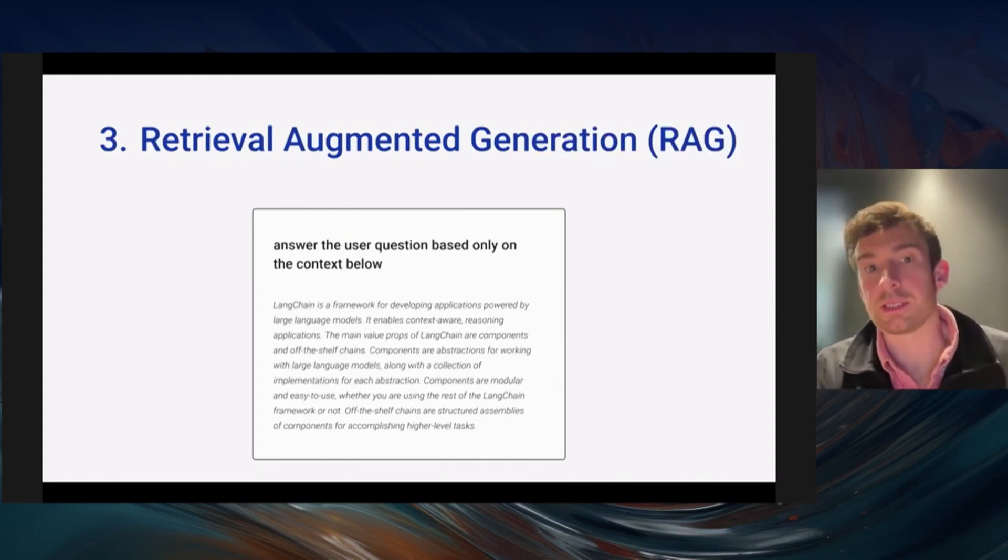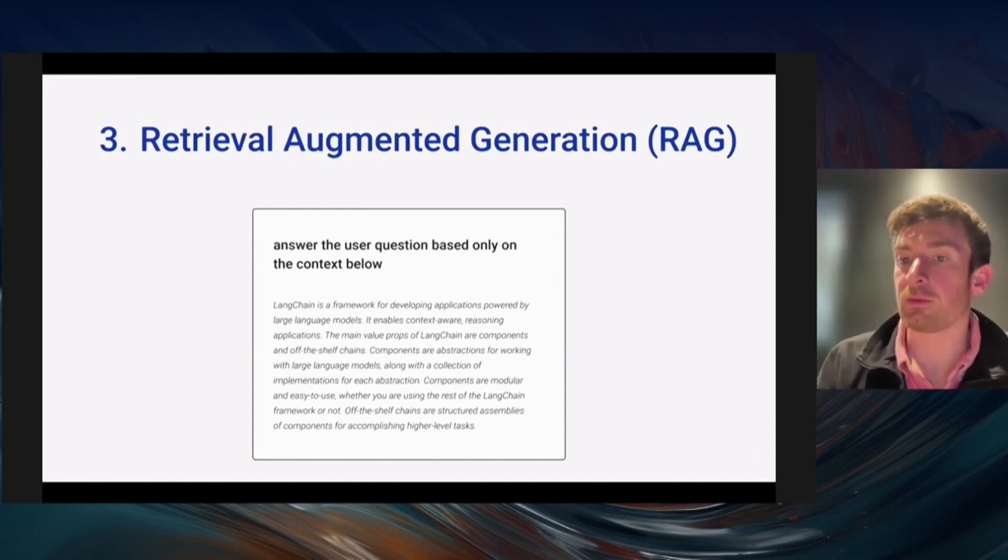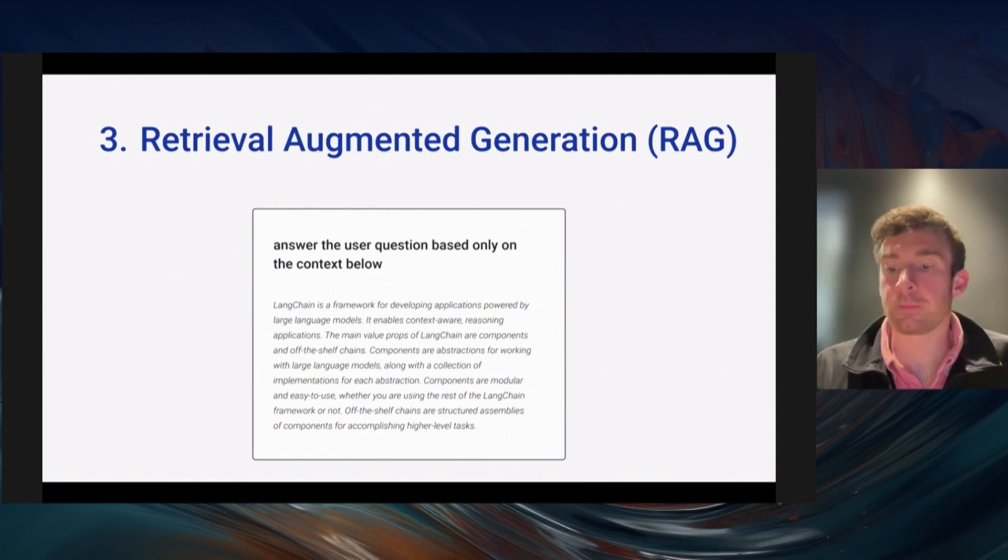Retrieval-augmented generation is the next type of context. This is probably the most popular type of context that people think of when they think of context-aware reasoning applications. This is bringing context to the language model and then asking the language model to generate output based in this context. This enables question answering over private documents and everything like that.